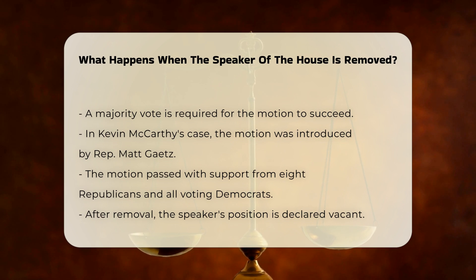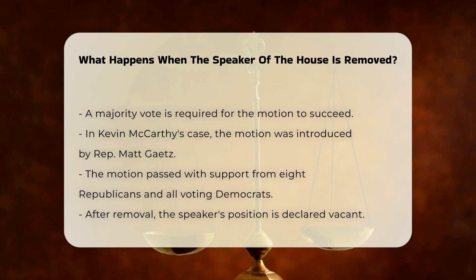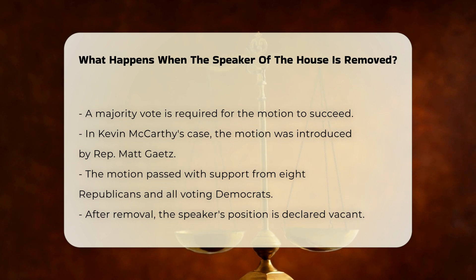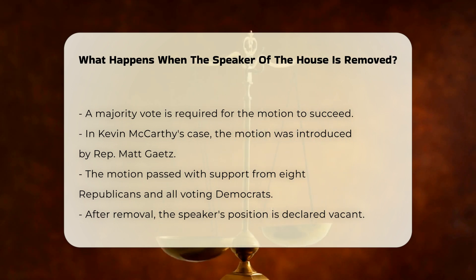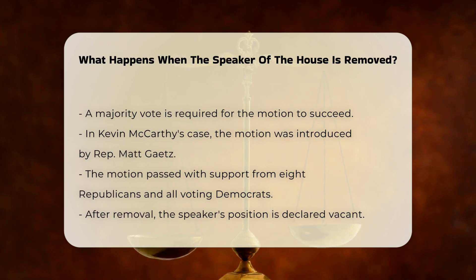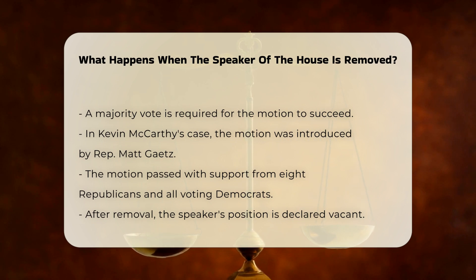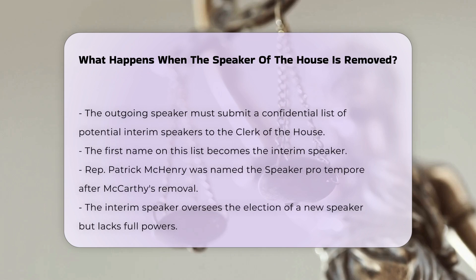Following the removal, the Speaker's position is declared vacant. According to House rules, the Speaker must submit a confidential list to the Clerk of the House naming members who can act as Speaker pro-tempore in the event of a vacancy. The first name on this list becomes the interim Speaker. Rep. Patrick McHenry, a close ally of McCarthy, was named the temporary Speaker, or Speaker pro-tempore, after McCarthy's removal.